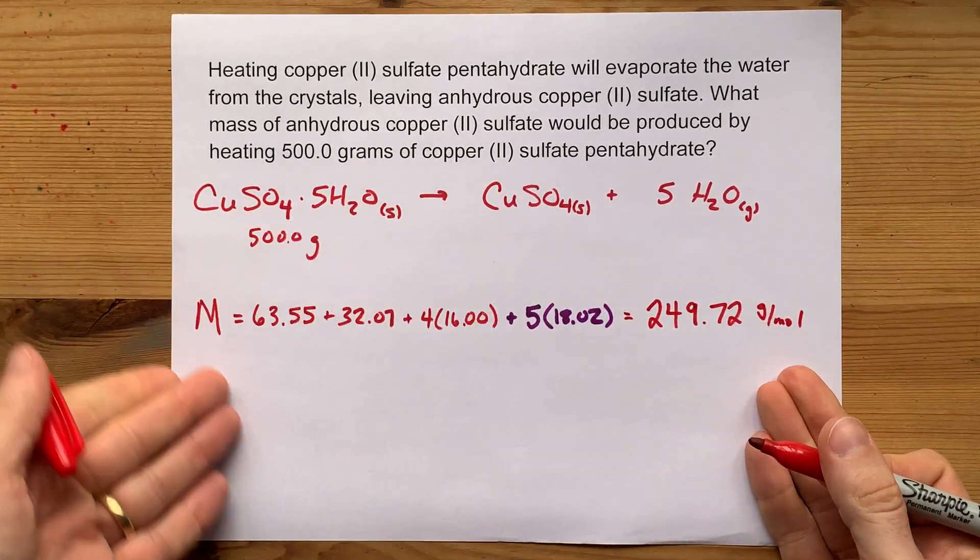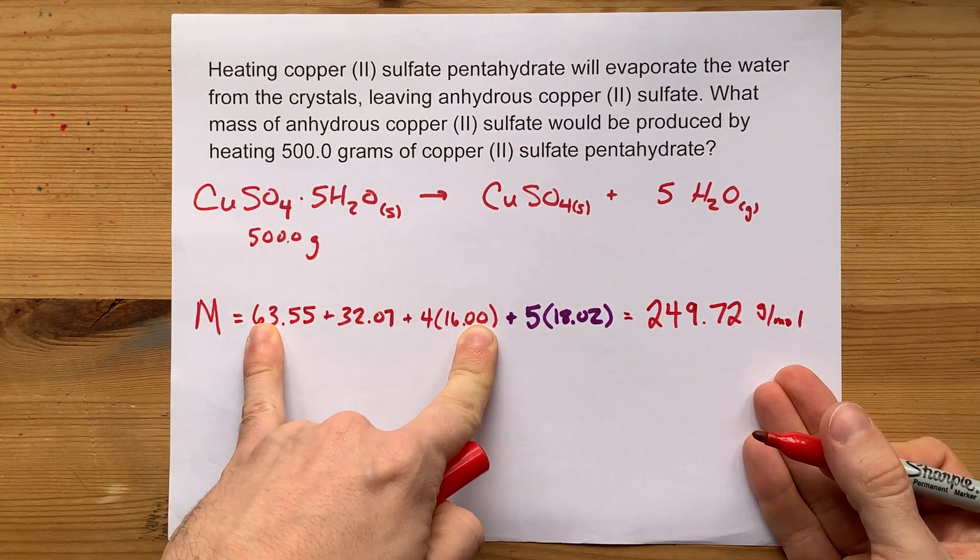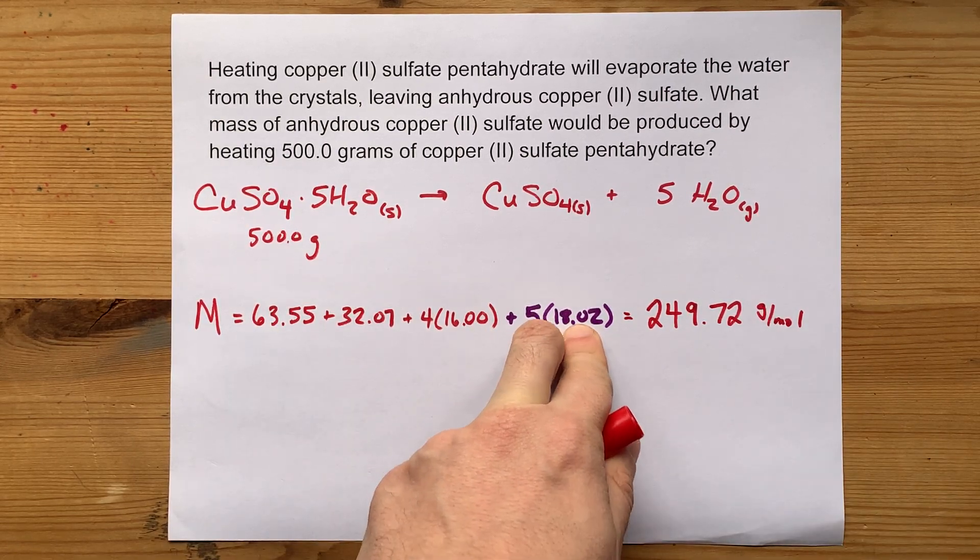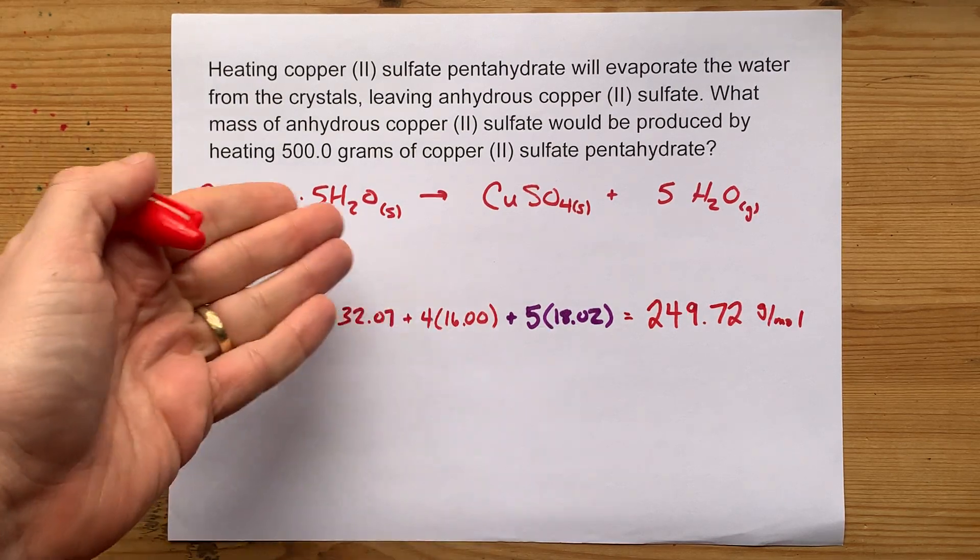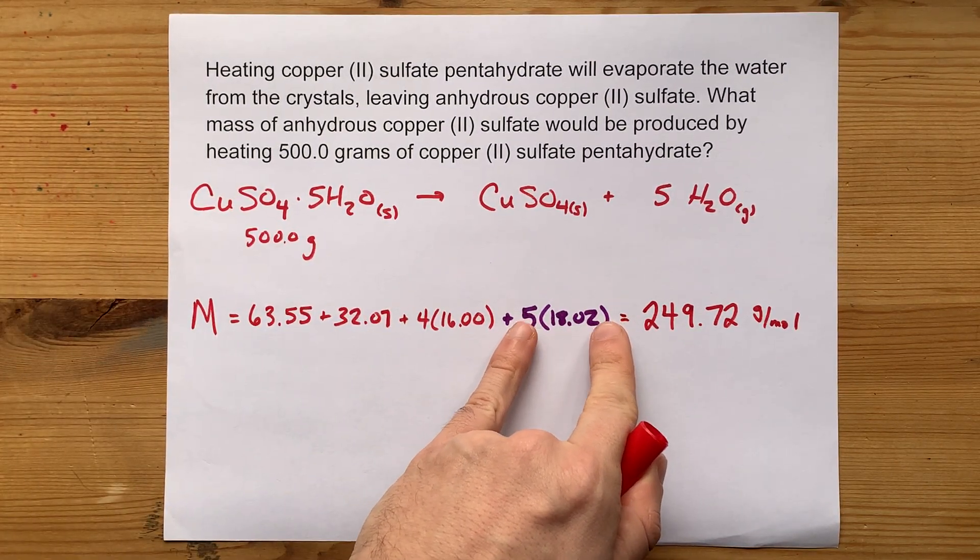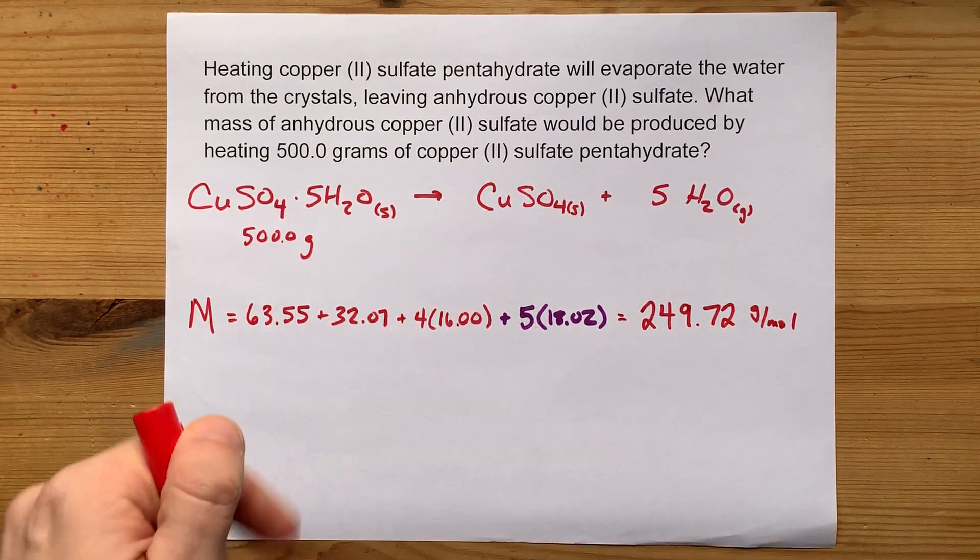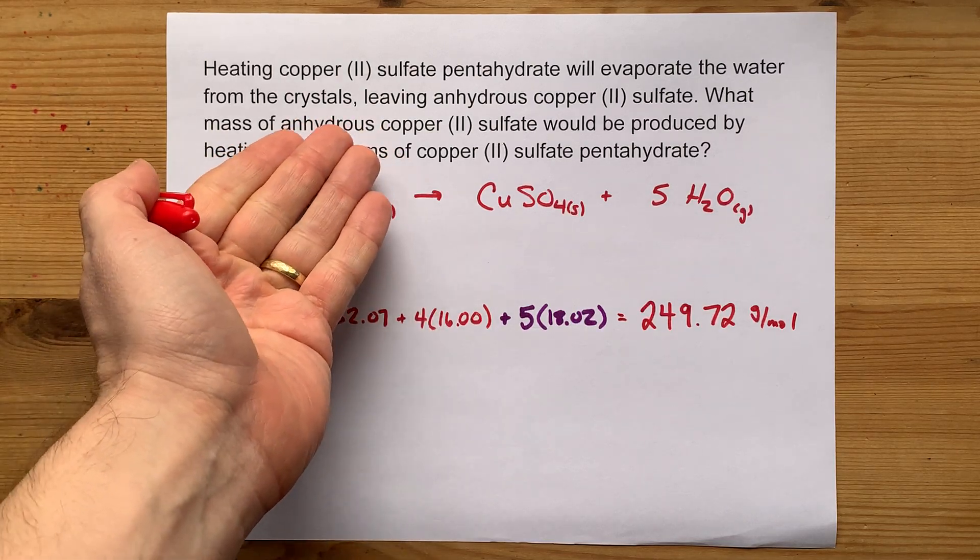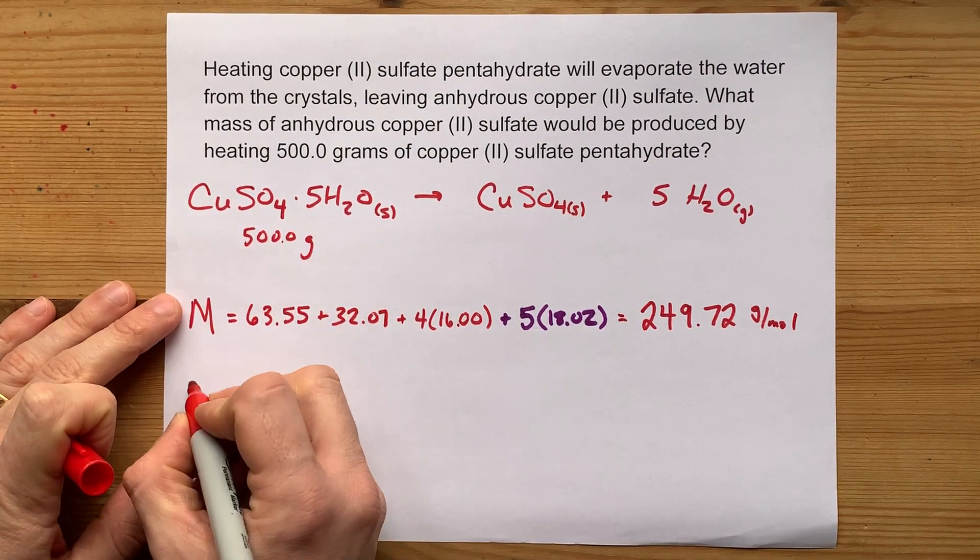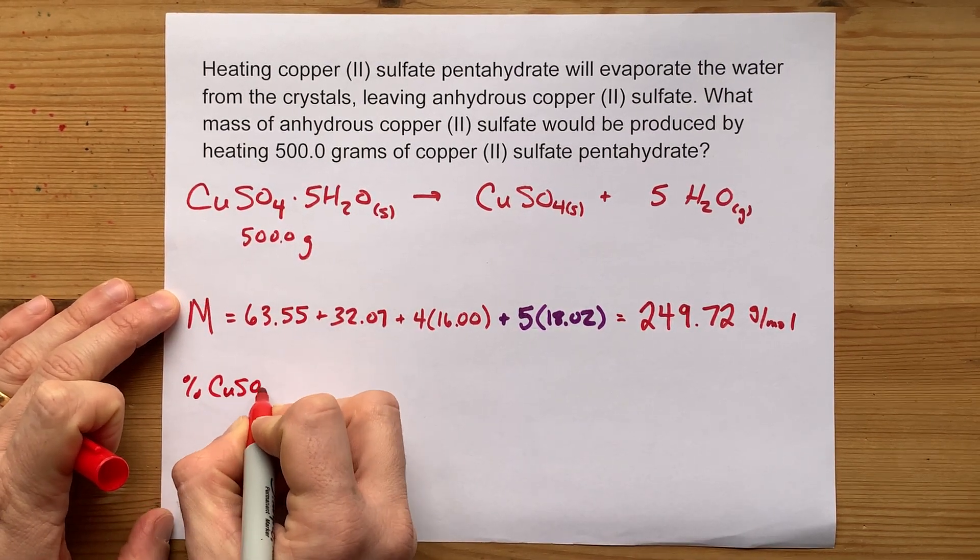Now, the question I have for you is, how much of that was contributed by the anhydrous compound, the CuSO4, versus the water? Lots of teachers will ask you for the percent by mass of water in the compound. And to get that, you take the contribution of water divided by the molar mass of the whole compound. Here, because we're asked for the mass of anhydrous copper that's lost, maybe we want just the percent that is actually CuSO4.